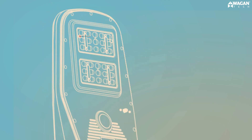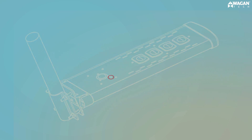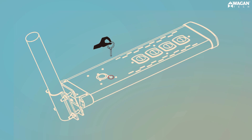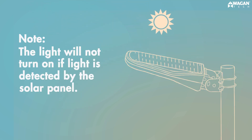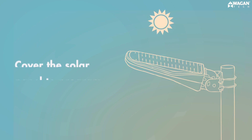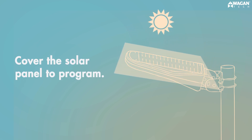There is also a red LED indicator that lets you know when the light is on. For the other models, the power switch is located here and is also accessed with the included pin tool. Insert the pin tool in the hole to activate the on-off switch. As a note, the light will not turn on during the day if light is detected by the solar panel. Simply cover the solar panel if you want to program the light during daylight hours.